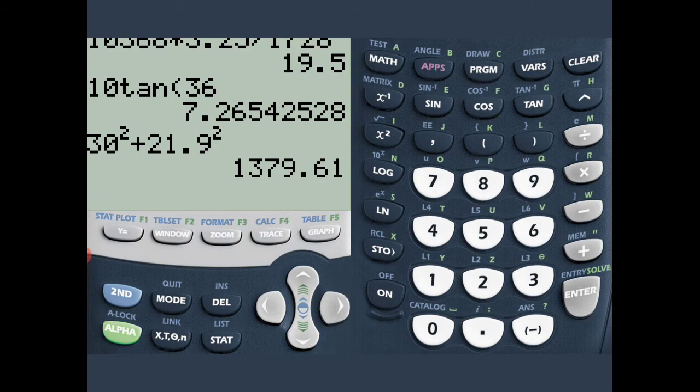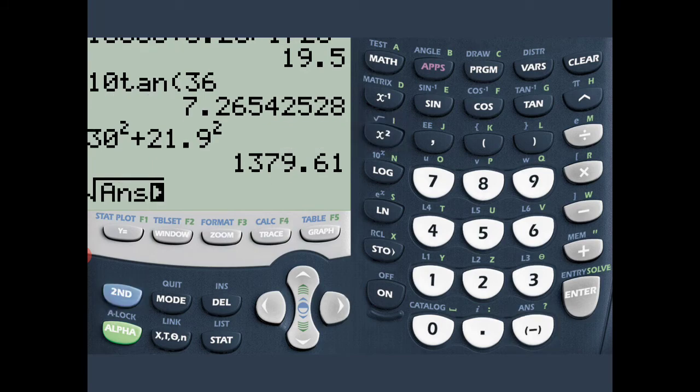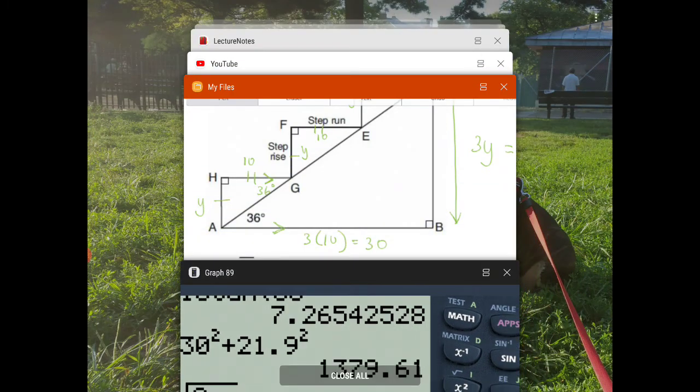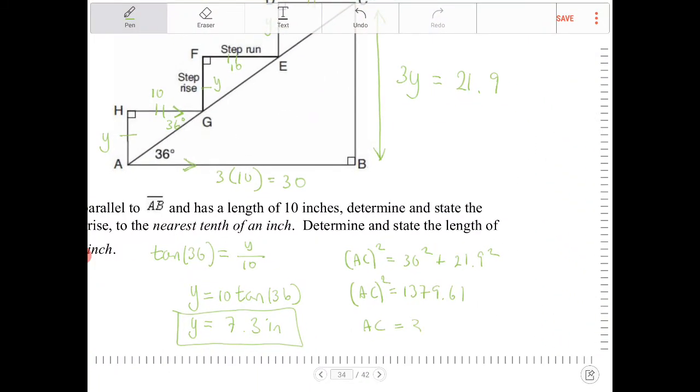So square root of that answer, we got 37.1, but it says to round to the nearest inch. So AC is going to be 37 inches, roughly.